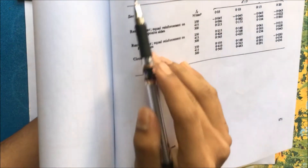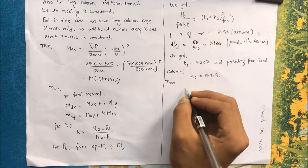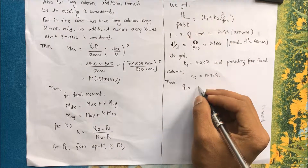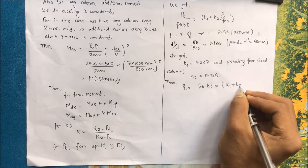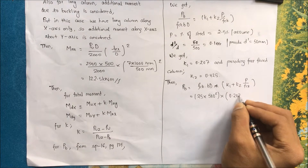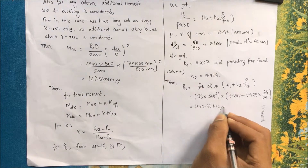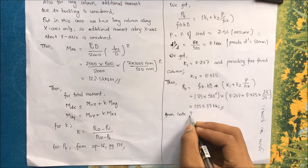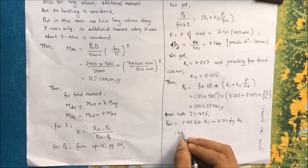For a four-faced rectangular column with d'/d = 0.1 and fy = 500 N/mm², k2 = 0.425. Therefore Pb = fck × b × d × (k1 + k2 × p/fck) = 25 × 500 × 500 × (0.207 + 0.425 × 2.5/25), which gives Pb = 1559.37 kN.